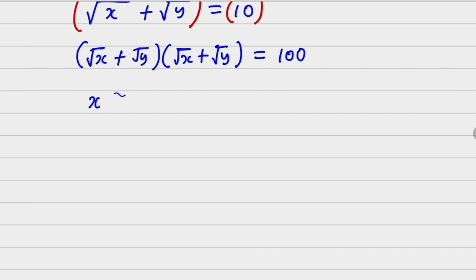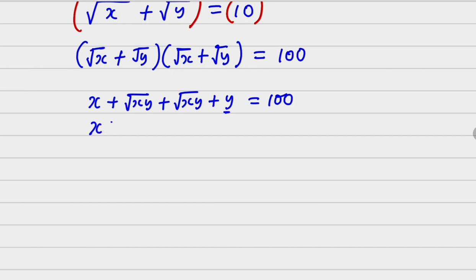Moving on, √x times √y gives √(xy), plus √(xy) from the other side, plus y, and this equals 100. Bringing the terms together — x plus y — these two √(xy) terms are common, so we get x plus y plus two √(xy) equals 100.